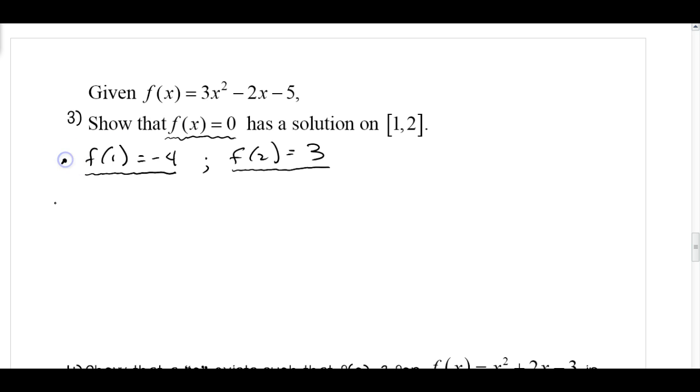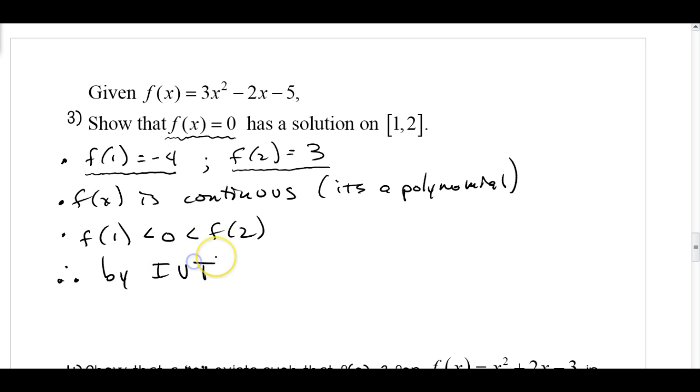So we're going to check our endpoints to make sure we have a change of sign. And we know that f of x is continuous because it's a polynomial. And we know that f of 1 is less than 0, which is less than f of 2. So therefore, by the Intermediate Value Theorem, there exists a c such that f of c equals 0 on the interval 1 comma 2. So that will be the notation for writing our answer there.